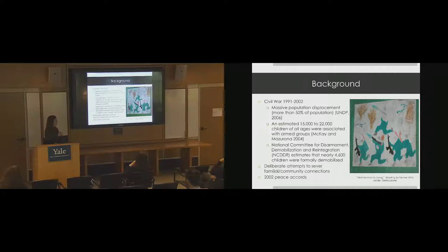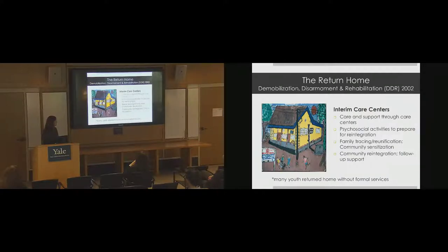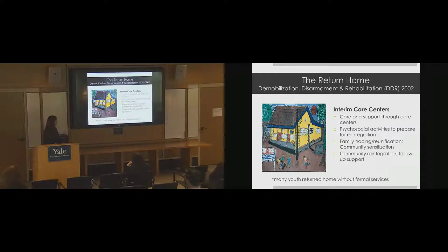At the end of the war, thousands of kids were coming out of fighting forces. It was decided that if at all possible, it was in children's best interest to return to families and communities. Interim care centers were set up throughout the country, run by NGOs and the government. Social workers would engage kids in psychosocial activities, basic numeracy and literacy, and then conduct tracing interviews to connect them with identified family members.